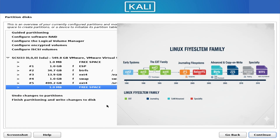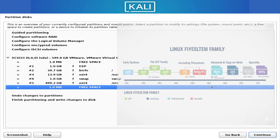Choosing the right file system also depends on your habits. If you want simplicity and stability, EXT4 is the best choice. If you want advanced features like snapshots or compression, BTRFS is ideal. If your work involves large files, XFS delivers strong performance. If you're on a device using flash memory, F2FS gives better efficiency. For enterprise-level data protection and long-term reliability, ZFS is unmatched.